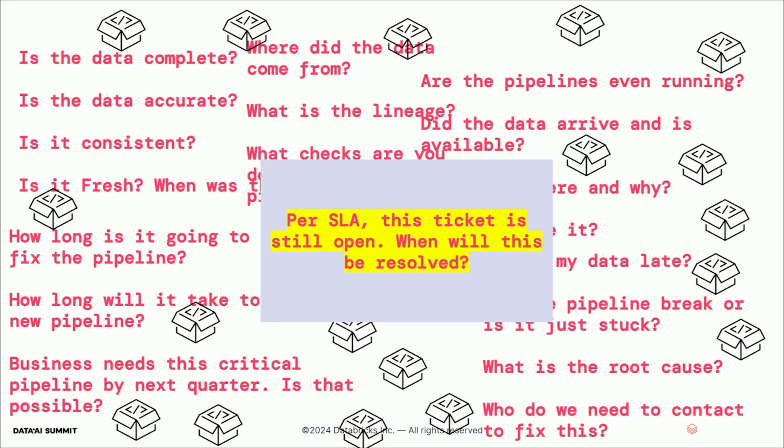One of our customers had about a thousand queries within a given month. At some point we hit critical mass — we're hiring data engineers and 80% of their job is answering Jira tickets, reading log analytics, running ad hoc database transformations. At some point we question ourselves, we lose the magic, and we lose the entire essence of data engineering.